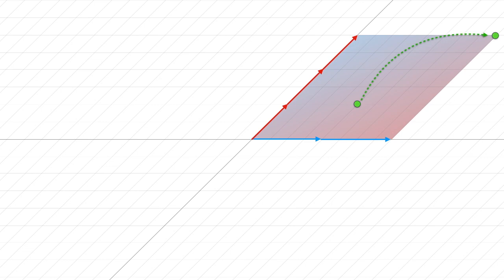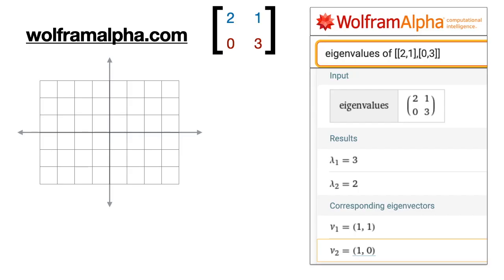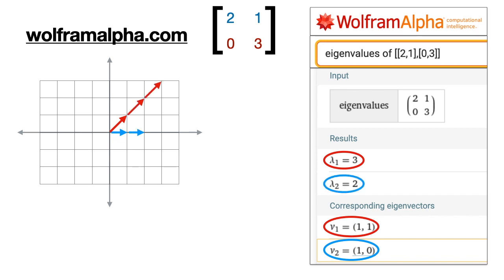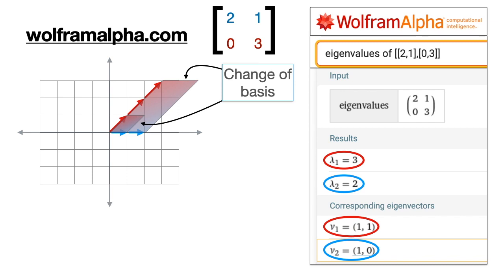The eigenvectors and eigenvalues define the entire transformation very nicely. Consider a point and see where the transformation sends it — the blue vector gets sent to twice itself and the red vector gets sent to three times itself, so the green point completes the parallelogram. This is why the eigenbasis is so useful: a linear transformation defined by a matrix can be complicated, but this expresses it as simply two stretchings in two particular directions. The entire procedure involves factoring a characteristic polynomial from the determinant and solving a system of linear equations, but you can also use WolframAlpha.com by simply typing 'eigenvalues of the matrix.'